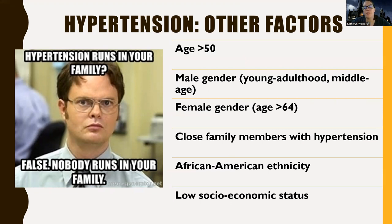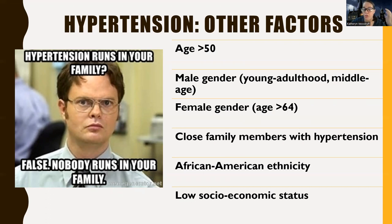Working in the cardiovascular ICU, I can't tell you how many times I've seen young African American males in their late twenties or early thirties with aortic aneurysms and other cardiovascular disease. There's a lot that genetics plays — you can't outrun your genetics. So never judge a person by their age, and always look at these other factors.